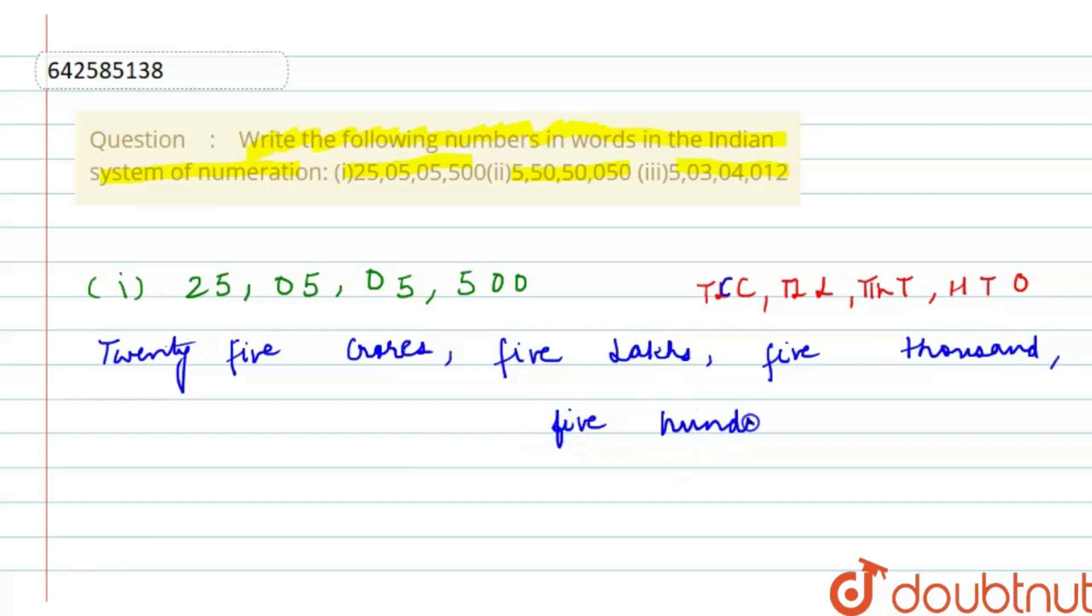Now let's proceed with the second part of the question. In the second part it is given 5,50,50,050. Let's read it as per the place values: ones, tens, hundreds, thousand, ten thousand, lakh, ten lakh, crore. So the number is five crore,